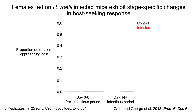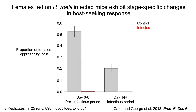In this system we also have evidence that infection alters host-seeking responses. On the y-axis here I have the proportion of females approaching a host, and on the x-axis I have two time periods: the pre-infectious period, when the oocyst is developing inside the mosquito's gut, and the infectious period, when the parasite is in the salivary glands and ready to be transmitted.